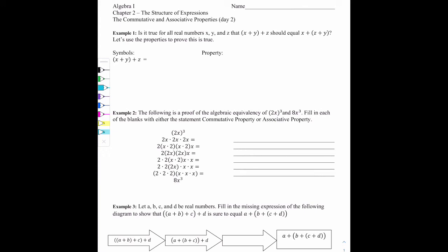Our next lesson is called the Commutative and Associative Properties Day 2. So in our first example, we want to look at how we can actually prove a statement using our properties.